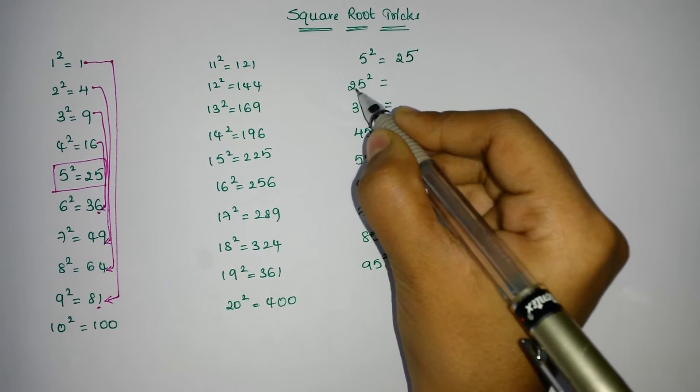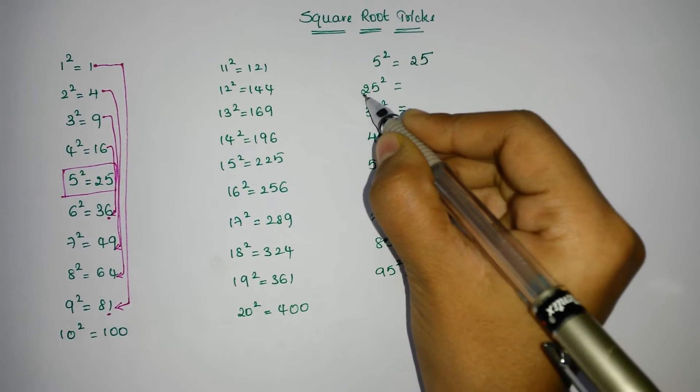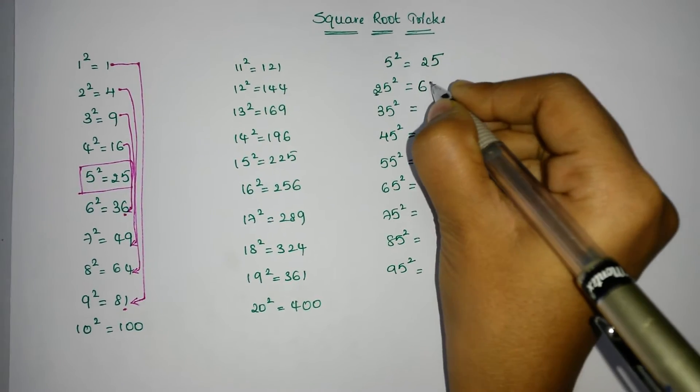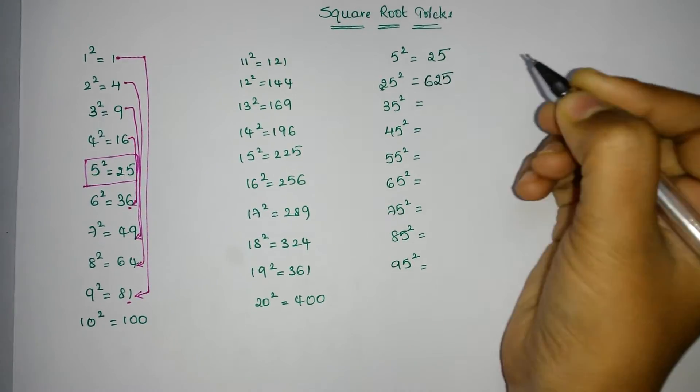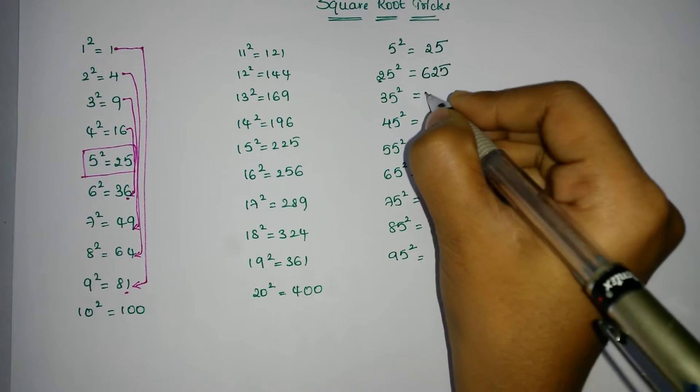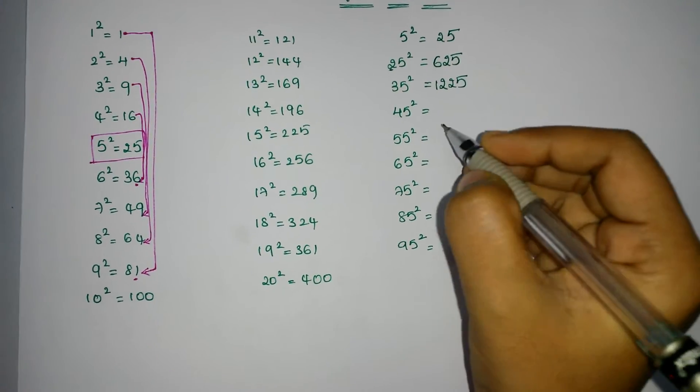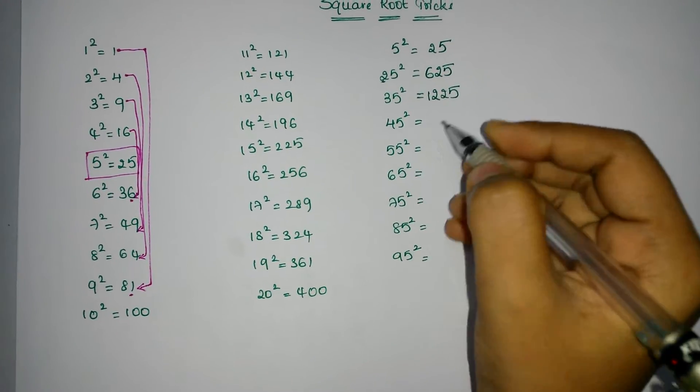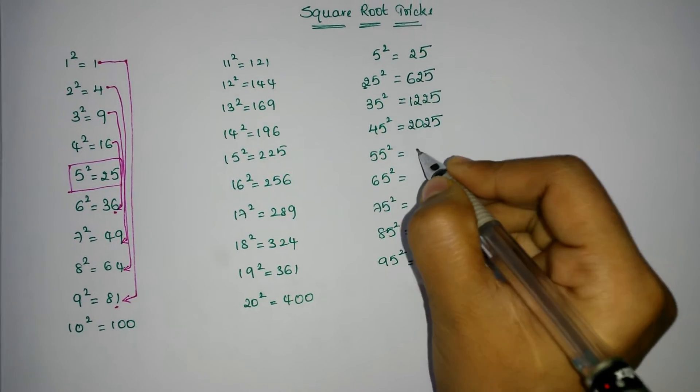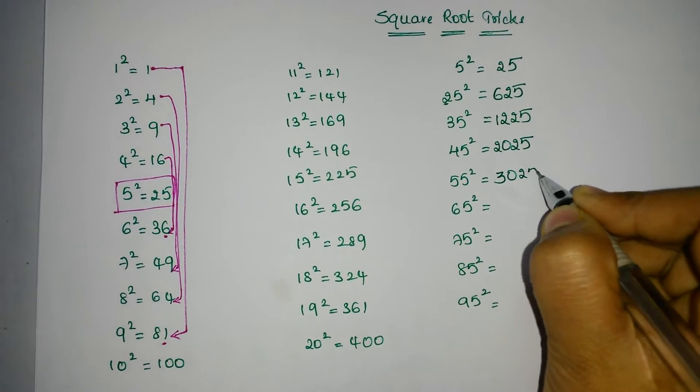So 2 into 3 is 6 and 5 square is 25. In the same way, 3 times 4 is 12 and 5 square is 25. 4 times 5 is 20 and 5 square is 25. 5 times 6 is 30 and 5 square is 25.